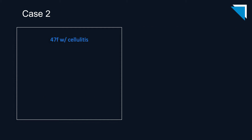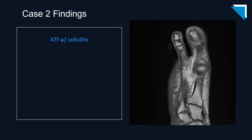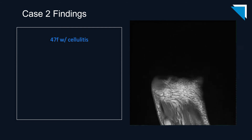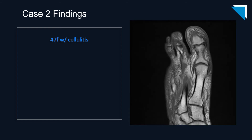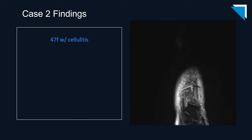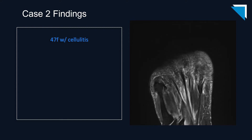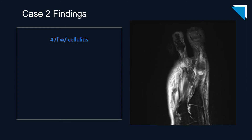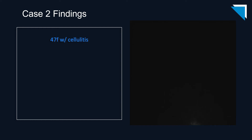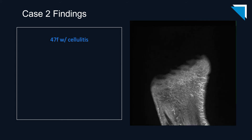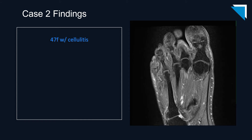Our next case is a 47-year-old woman with cellulitis. I like to begin with the axial non-fat suppressed T1-weighted sequence to evaluate osseous architecture. There are some mild degenerative changes, but nothing really stands out — no erosions or areas of marrow edema. I do see a little soft tissue ulceration abutting the hallux distal phalanx. Moving on to the axial fluid-sensitive sequence, I notice diffuse soft tissue swelling and subcutaneous edema, and my attention is drawn to the hallux distal phalanx, where there is bone marrow edema. We were fortunate to have post-contrast images, which show some subtle bone marrow edema in the hallux distal phalanx.